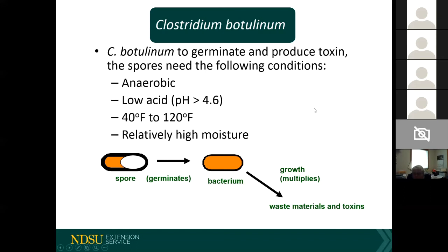We consume these spores all the time — they're in the environment. When you eat a vegetable, you might be eating a spore, but the spore is inert and doesn't cause harm. It's only when the spore germinates into live bacteria that problems arise, because the bacteria produce the toxin. In a product like a canned green pea, if the toxin is present, there is a real possibility of getting botulism.